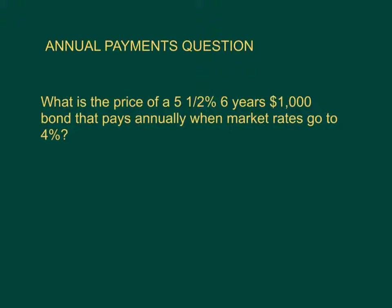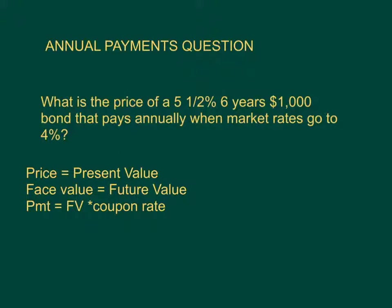Let's do our first question. This is an annual payment bond — that's typical of government bonds. Most of the time I'm just going to ask you what the price is. Remember, price per bond is the same as present value. The face value, or whatever this bond is stated at, is your future value. So this is a $1,000 bond. The payment equals your future value times your coupon rate. Your period is the number of years or semi-annual periods — this is an annual payment bond, so it's just the number of years. Your rate is the market rate.